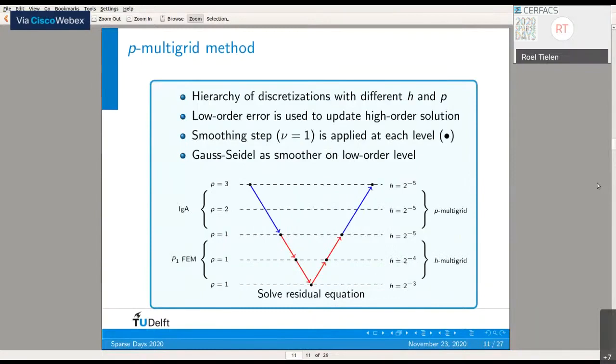So how does the P-multigrid look like? Suppose we're solving a linear system discretized with third-order B-spline basis functions. We construct a hierarchy based on different values of P and H. After applying smoothing on the high-order level, we go directly to level P equals 1, where we obtain a coarse-grid correction.